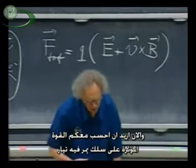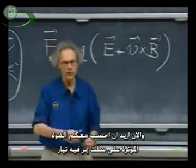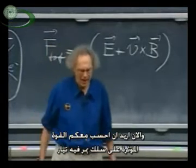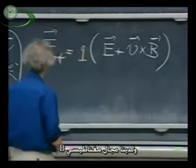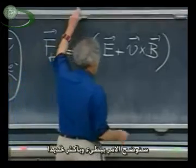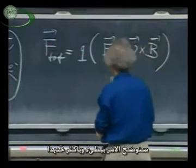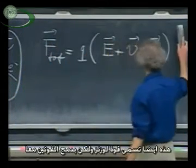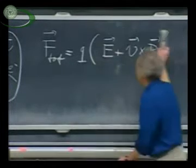Now I want to calculate with you the force on a current that runs through a wire — current I — when we have a magnetic field B. We're going to be more and more quantitative. This is often also called the Lorentz force — the combination of the two.